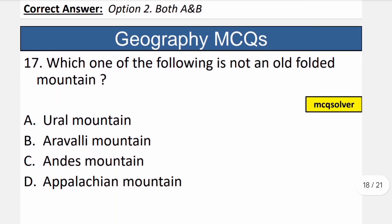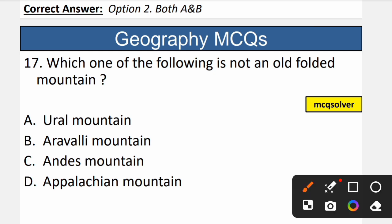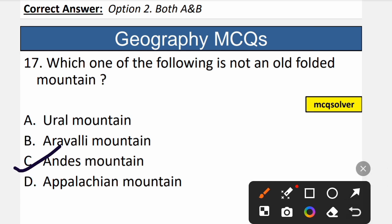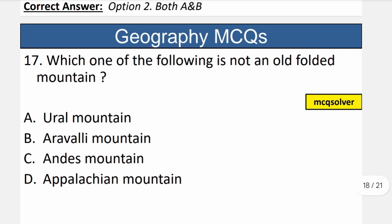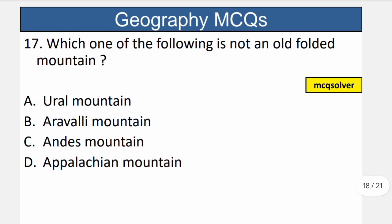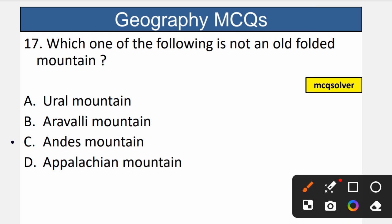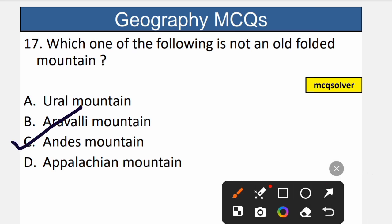Question number 17: Which one of the following is not an old folded mountain? The correct option is C — the Andes mountain. The Andes is not an old folded mountain. So C is the correct option.